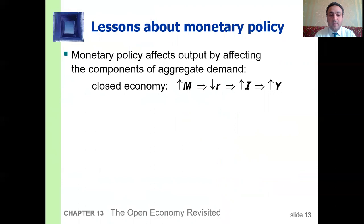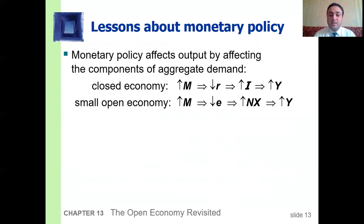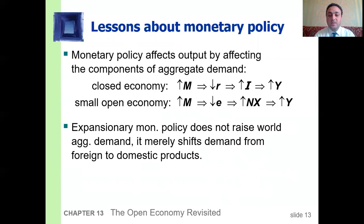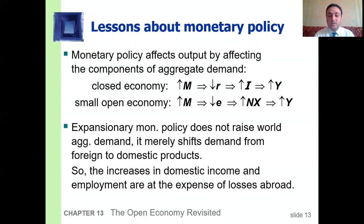In a closed economy, increasing the money supply decreases the interest rate, investment increases, and output increases. In a small open economy, increasing the money supply decreases the nominal exchange rate, which increases net exports and increases output. The expansionary monetary policy doesn't raise world aggregate demand but merely shifts demand from foreign to domestic products, so the increase in domestic income and employment are at the expense of losses abroad, because the whole world is a closed economy.